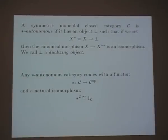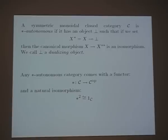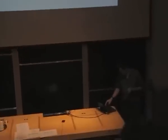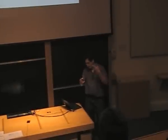A symmetric monoidal closed category is called star-autonomous if the internal hom arises in a particular way: there exists an object called 'bottom' (⊥) such that when you define the dual of any object X as X⊸⊥, you get a canonical morphism from X to its double dual. In general that needn't be an isomorphism — in infinite-dimensional vector spaces it isn't — but your category is star-autonomous if it is an isomorphism. You call this bottom a dualizing object.